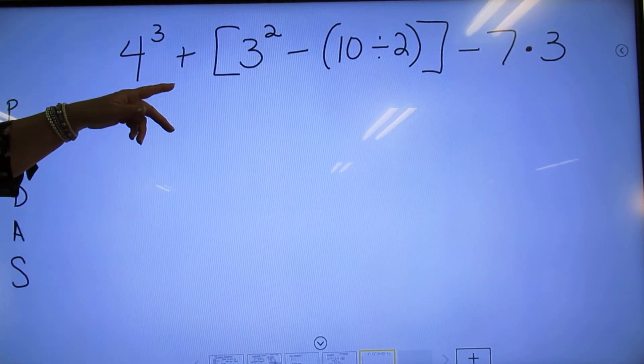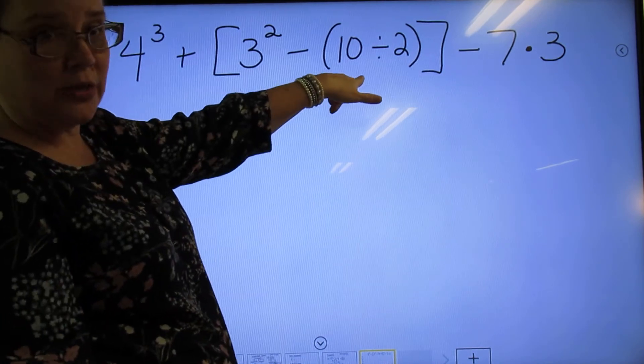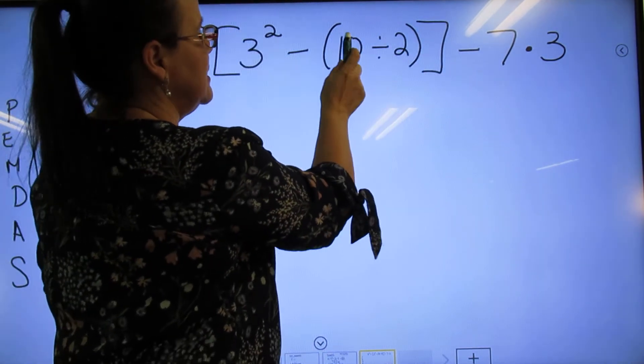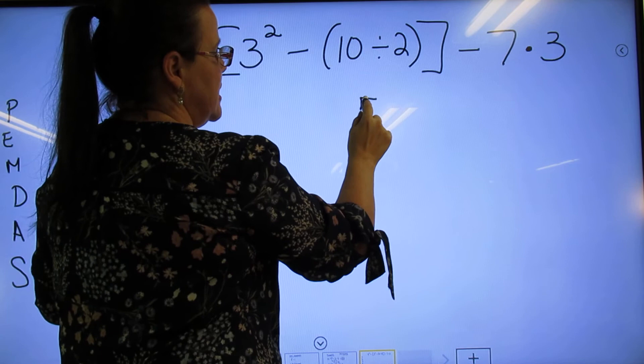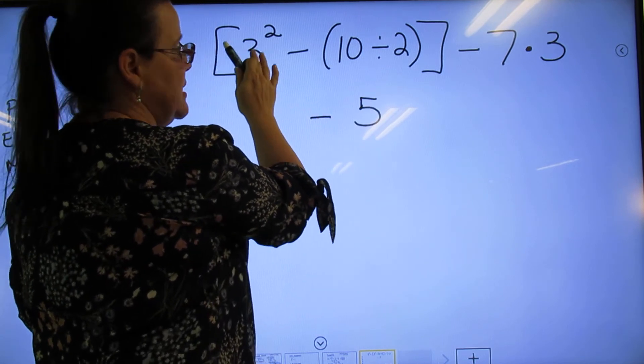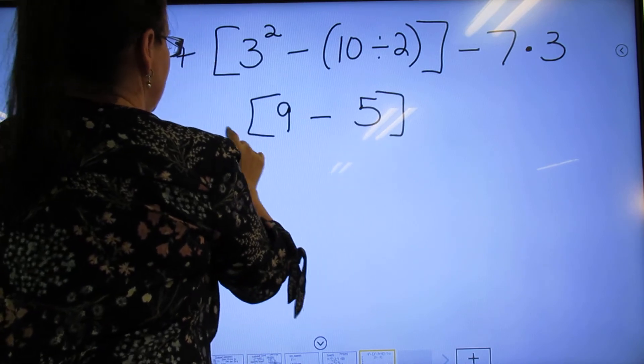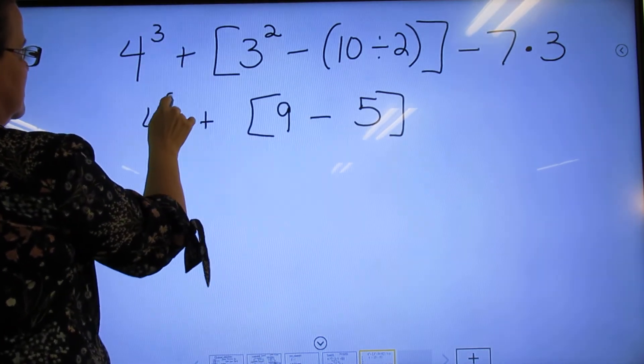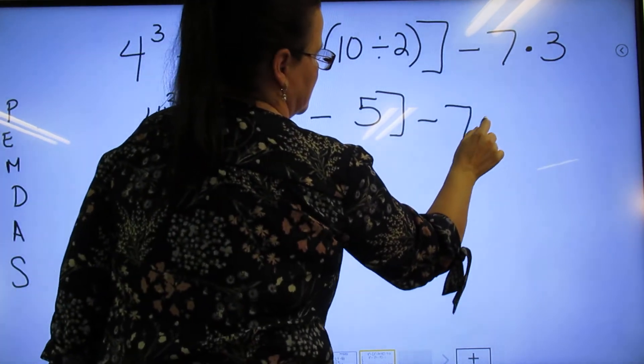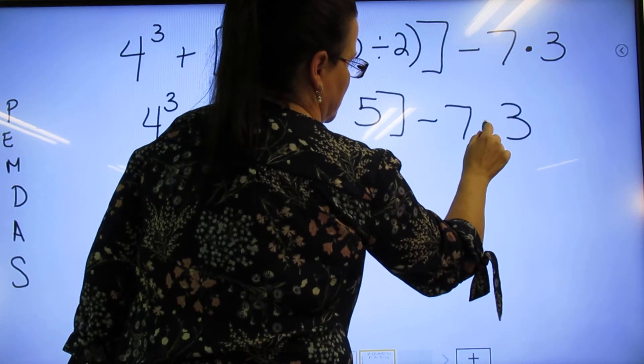parentheses. I have brackets and parentheses, so I'm going to do what's in here first. That's what these brackets mean. 10÷2 is 5. 3² is 9. And then bring it all down.